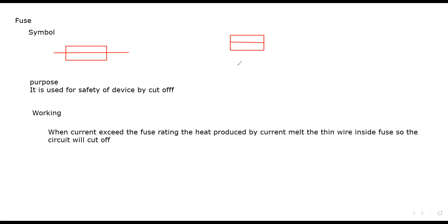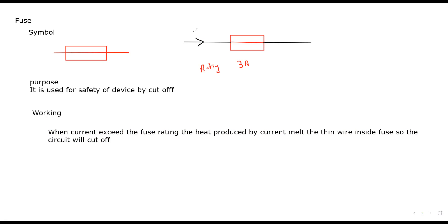For example, if a fuse has a rating of 3 amperes, it means it can allow up to 3 amperes of current to pass through. But if the current is more than 3 amperes — for example, 3.5 amperes — that extra current will produce greater heat. 3 amperes produces a heating effect, but that heating effect is not sufficient to melt the thin metal wire.